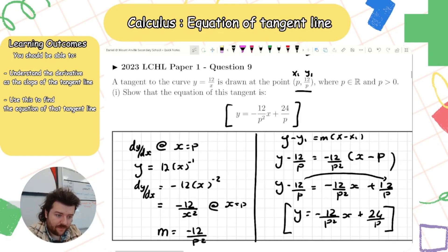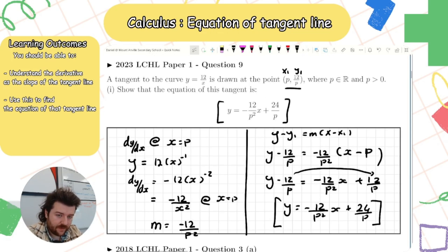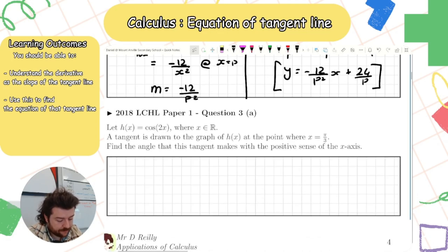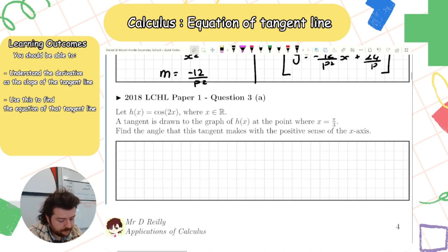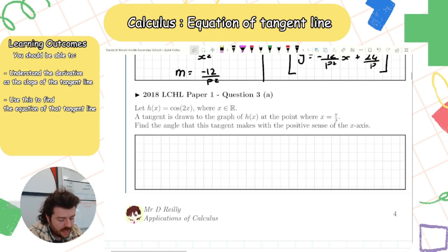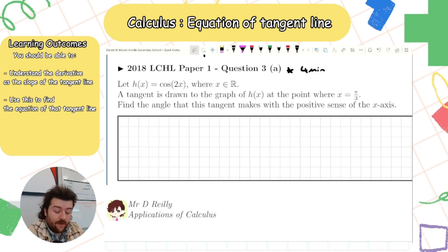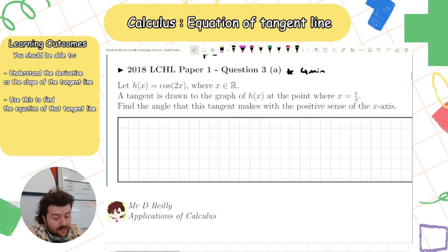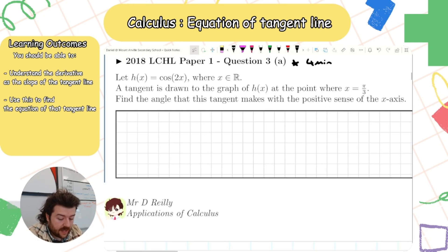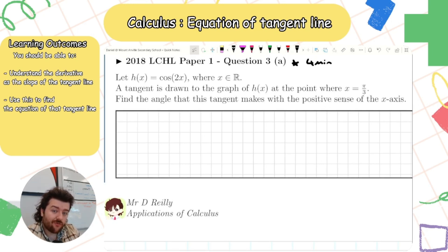Now let's look at this question from 2018. Let h(x) = cos(2x). A tangent line is drawn to the graph of h(x) where x = π/3. Find the angle that this tangent makes with the positive sense of the x-axis.